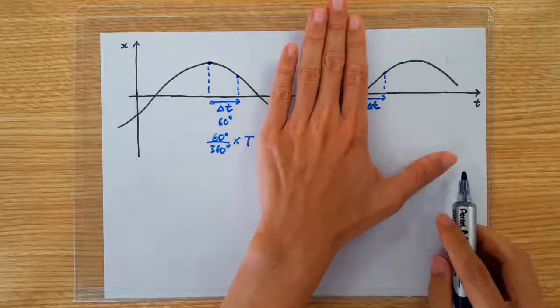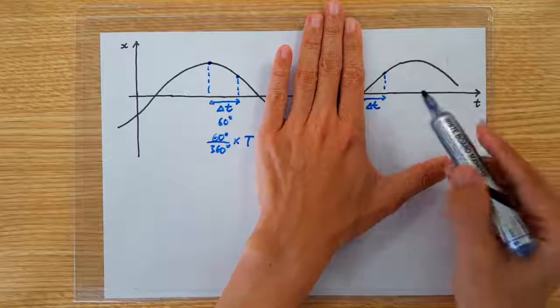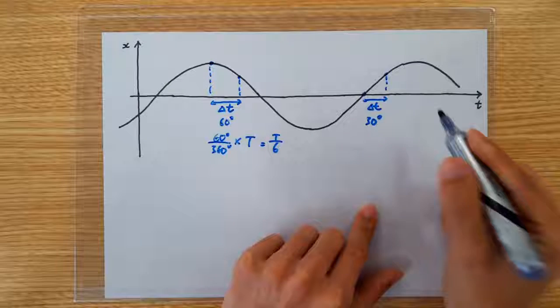Again, let's set t equals to zero here. What we see now is a sine graph. So sine 30 degrees is a half. That tells me that this corresponds to 30 degrees.